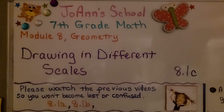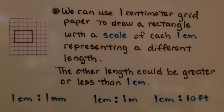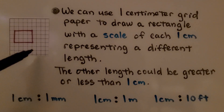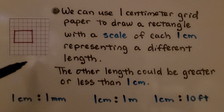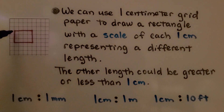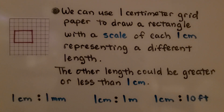8.1c: Drawing in Different Scales. We can use one centimeter grid paper to draw a rectangle with a scale of each one centimeter representing a different length. The other length could be greater or less than one centimeter.